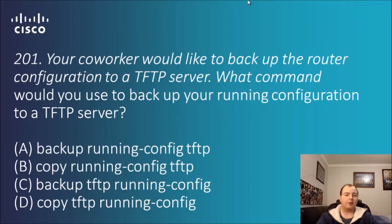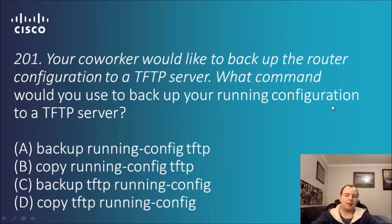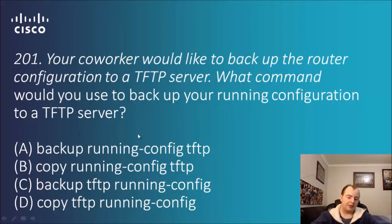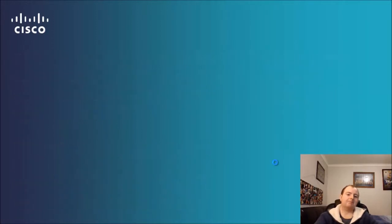Question 201: your co-worker would like to backup the router configuration to a TFTP server. What command would you use to backup your running configuration to a TFTP server? The syntax in these answers is very important. The options are: backup running-config TFTP, copy running-config TFTP, backup TFTP running-config, copy TFTP running-config. It's not 'backup', so we eliminate those two. The syntax is: copy, then what you want to backup, then where. The answer is B: copy running-config TFTP.